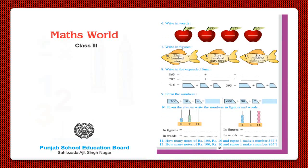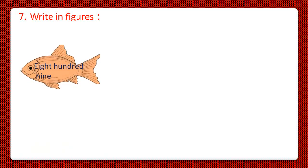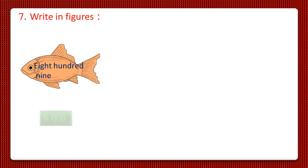So we have reached question number 7 and the question is write in figures. So dear students, the number given is 809 which we have to write in figures. For that, let us take the 800 man card and on placing the 9 man card on it, the number becomes 809.